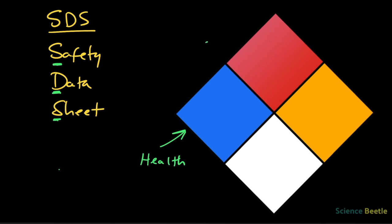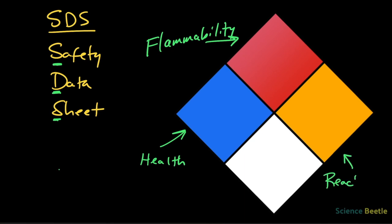In the red section at the top, these are going to be flammability — hazards associated with whether the compound or substance is going to catch on fire, whether it's combustible or flammable. The yellow section is reactivity, looking at hazards associated with whether the substance is going to react with another substance. Finally, the bottom section — the light gray or white area — contains the special hazards.